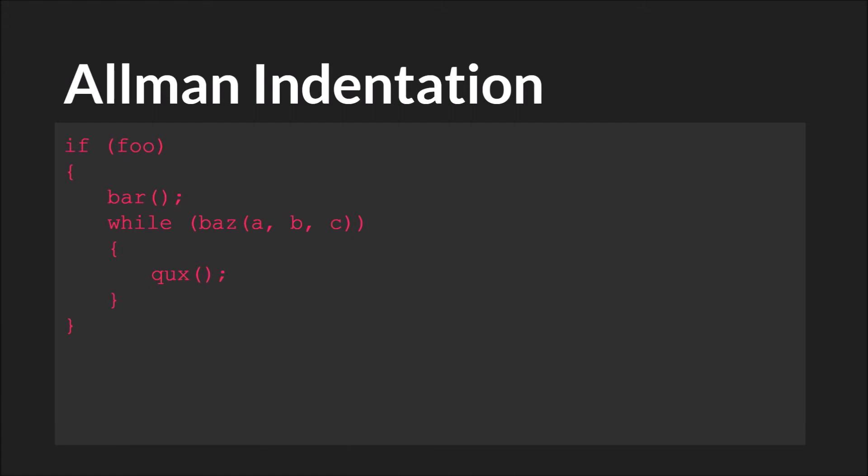In Allman style, you put the first bracket without indenting, underneath the first line of the code block. Then you indent and write the code, and again put the closing bracket at the same level, just as in KNR. These are just two styles — there are many more. If you want to look at some of them, I've linked to the Wikipedia page at the very end.